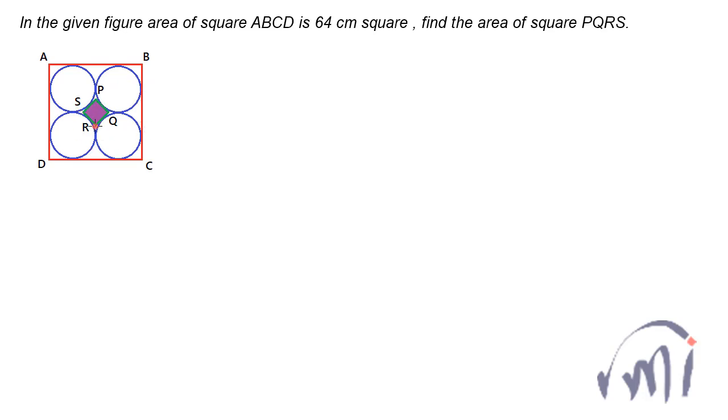Then we get a tiny area over here where again we have a square where each side of this small square PQRS is tangent to one of the small circles. And we have to find the area of this tiny square PQRS. So if we can find the length of one side of this square we can very well find the area of the square.